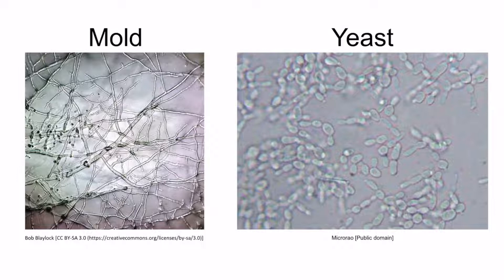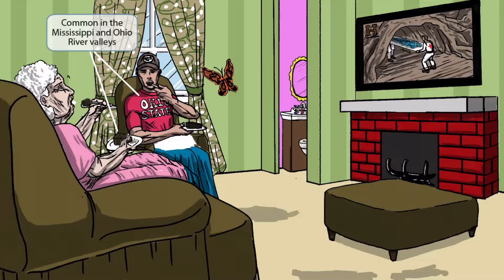Now notice that we've added one of the granny's sons to the image. If you look at his shirt, you can see that he's sporting an Ohio State shirt, which should make you think of Ohio. They're also eating some Mississippi mud pie, which should make you think of Mississippi. Together, these two ideas should help you remember that histoplasma is most commonly found in the Mississippi and Ohio River valleys.